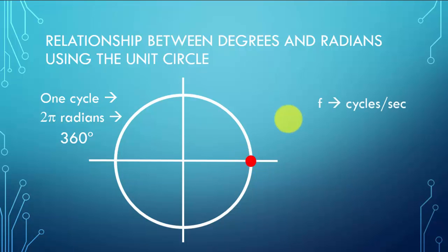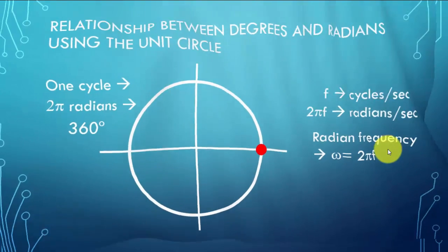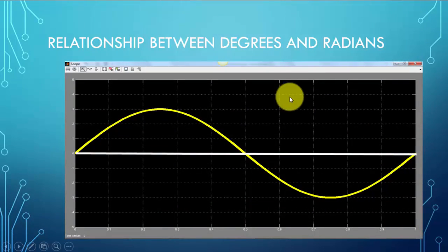Hence, we can define the frequency of cycles per second with another derived frequency relationship by multiplying f by 2π, which yields radians per second. Since we're multiplying by 2π radians, we define 2πf as omega (ω), which we call the radian frequency. Let's look at this in a different perspective from this graph and how we relate radians and degrees.